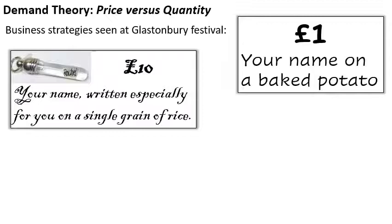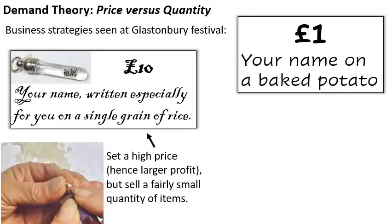Those are two different strategies, each with its own advantages and disadvantages. For the rice, you're making £10 for a single grain of rice — that's a pretty good deal. It's going to take you a while to write out the name; it's a specialized skill set. But think about how many people are going to pay for that given it costs £10. You're limiting the number you can sell by putting the price so high. You set a high price so you get a much larger profit per item, but the trade-off is that you don't sell very many.